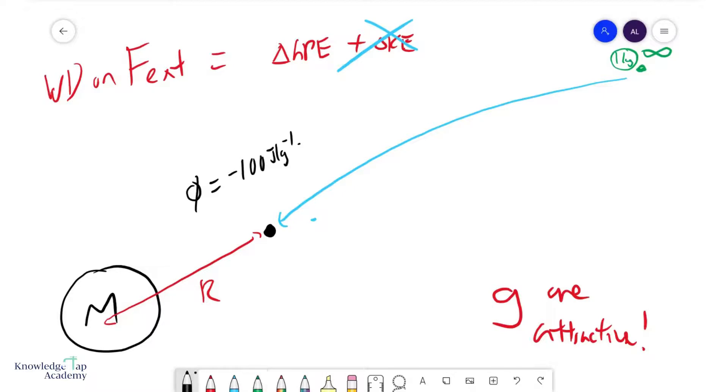And so it follows that this external force will be exerted in this direction, opposite to the movement of this mass. And therefore, the work done by this external force is always negative, which also explains why your potential values at any point in space is always negative.